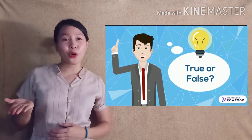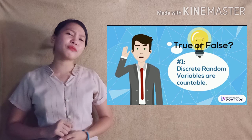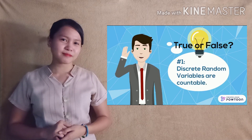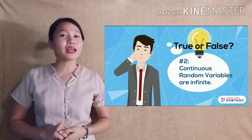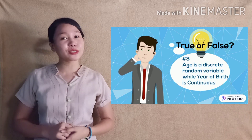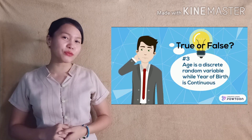Before we proceed to our lesson proper, I will first check your prior knowledge about the topic. For every item, you will just answer true or false. Number 1: Discrete random variables are countable. True or false? Number 2: Continuous random variables are infinite. Is it true or is it false? And lastly, number 3: Age is a discrete random variable while year of birth is continuous. Is it true or false?